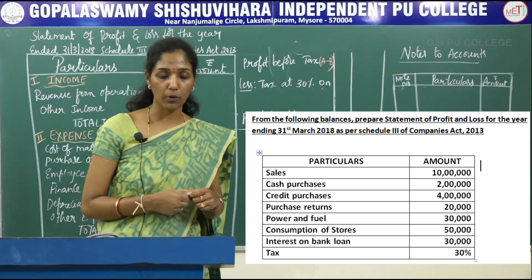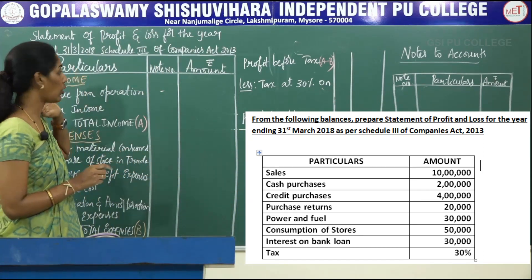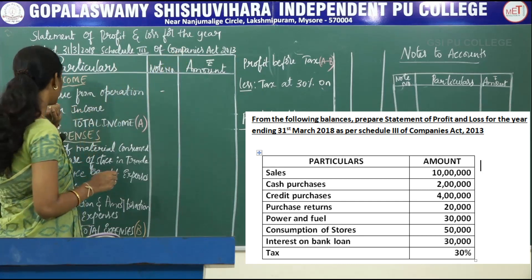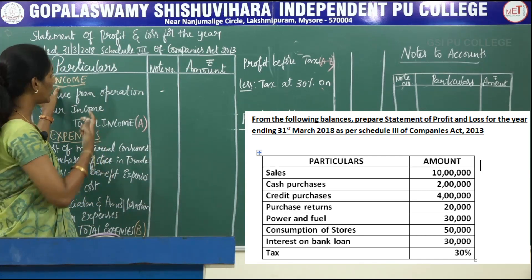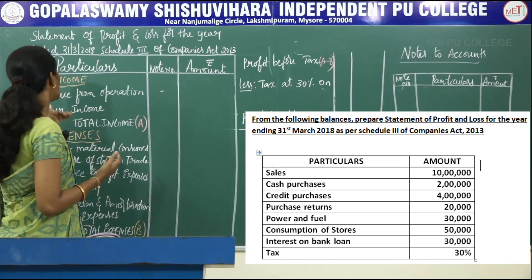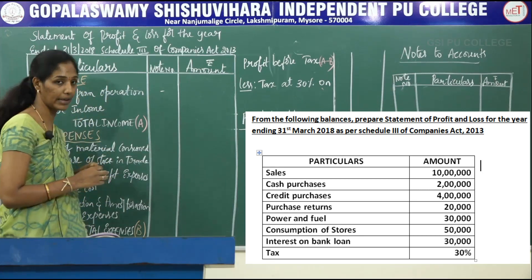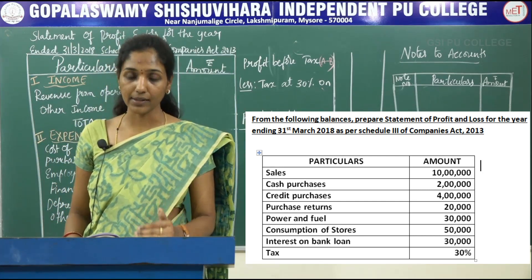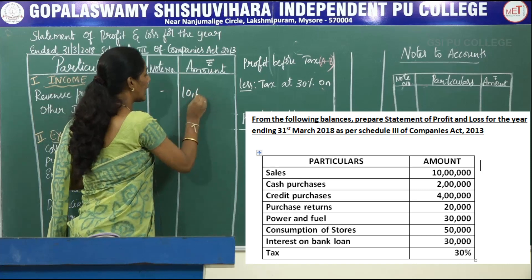As usual, before going to solve the problem, you have to write the format of profit and loss statement correctly. Statement of Profit and Loss for the year ending 31st March 2018, Schedule 3 of Companies Act 2013. Particulars, note number, amount. The first major heading is income, and the second major heading is expenses. Under income, there are two items: revenue from operation and other income. Revenue from operation is also called as sales. They have given sales rupees 10 lakh, so record it in revenue from operation as rupees 10 lakh directly.